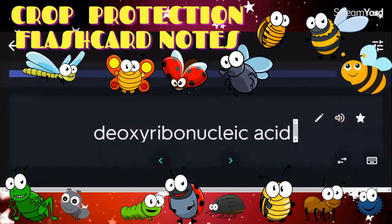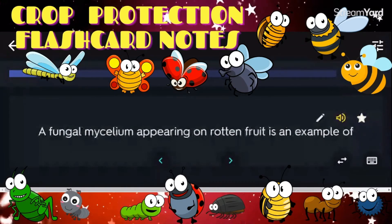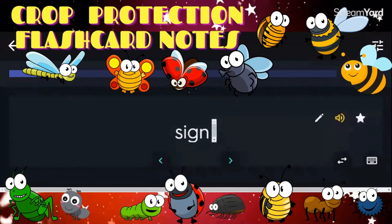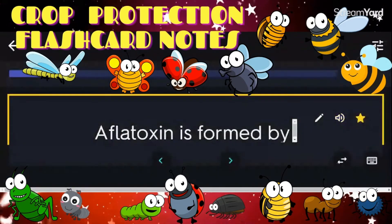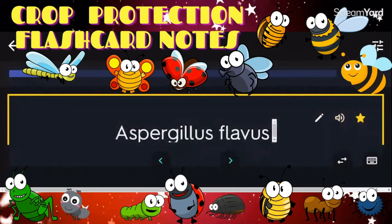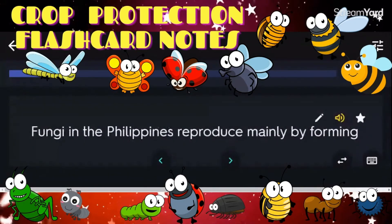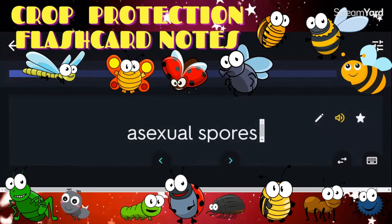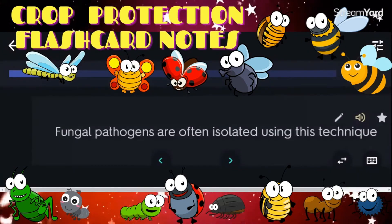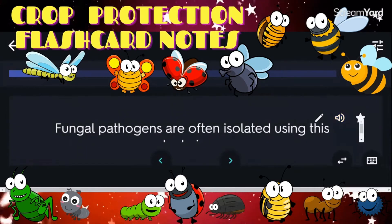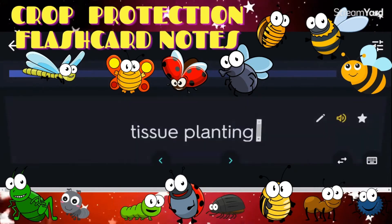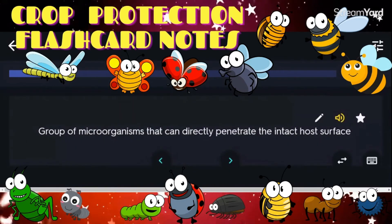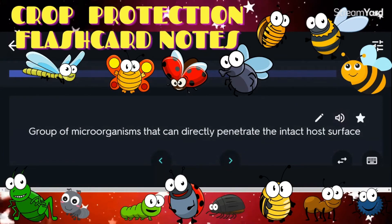A fungal mycelium appearing on rotten fruit is an example of a thallus. Aflatoxin is formed by Aspergillus flavus. Fungi in the Philippines reproduce mainly by forming asexual spores. Fungal pathogens are often isolated using the tissue planting technique. Group of microorganisms that can directly penetrate the intact host surface: fungi.